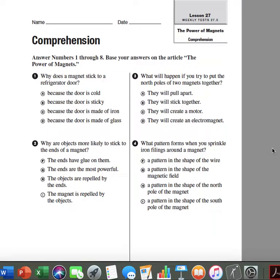Number 1. Why does a magnet stick to a refrigerator door? A. Because the door is cold. B. Because the door is sticky. C. Because the door is made of iron. D. Because the door is made of glass.